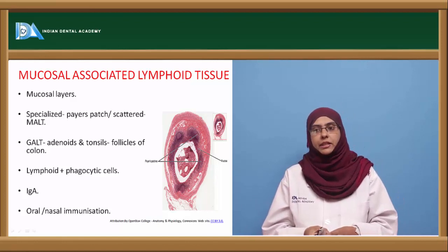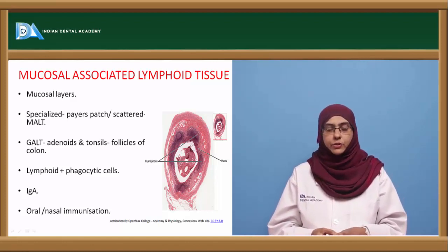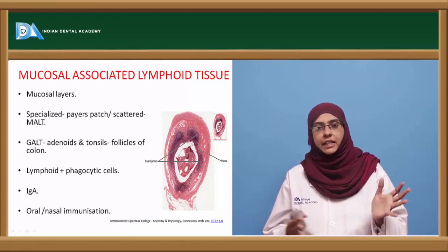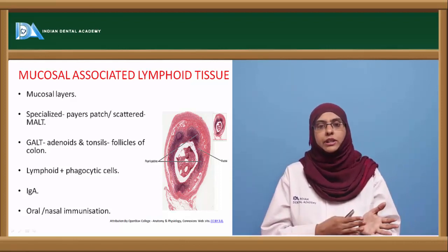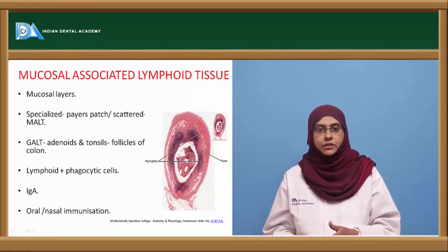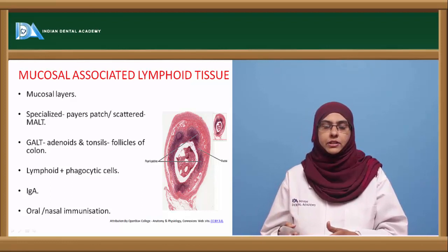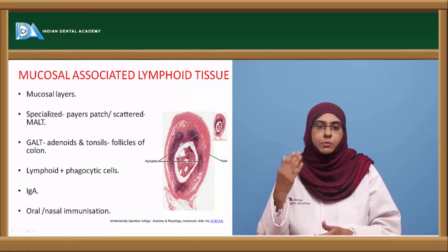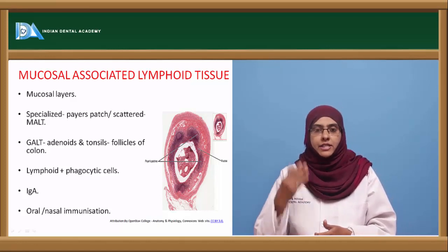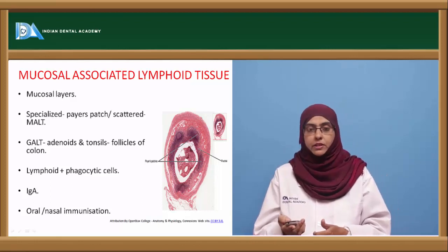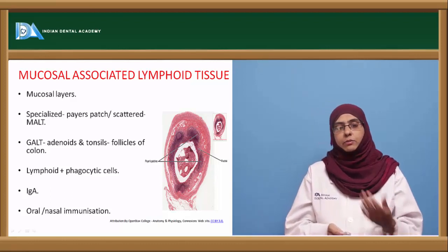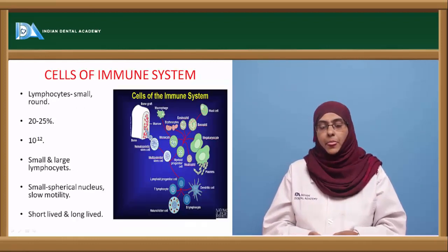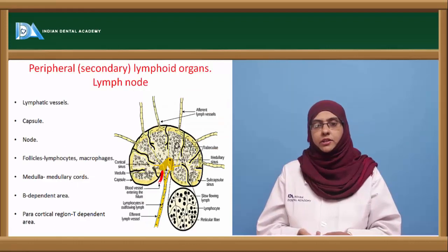IgA is the prominent antibody seen in mucosal-associated lymphoid tissue. Because MALT is a connected lymphoid tissue, antibodies produced at one area also induce production at other areas, giving superiority to oral or nasal immunization. When oral or nasal immunization is given, the whole body responds and mounts a generalized immune response. This is why, in case of vaccinations, oral and nasal immunization leads to whole-body immunity against a particular antigen.